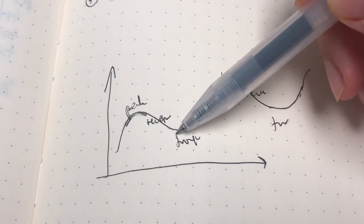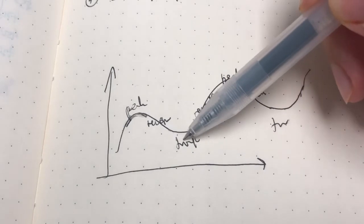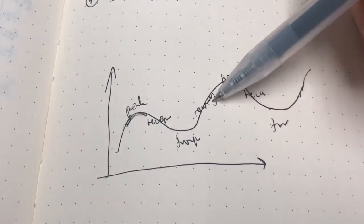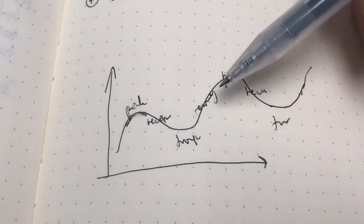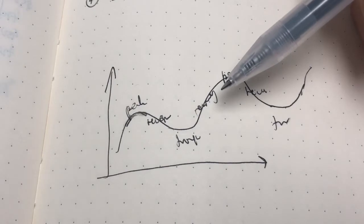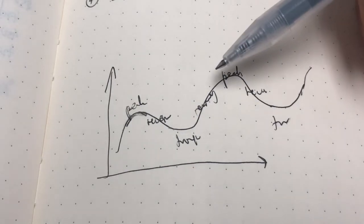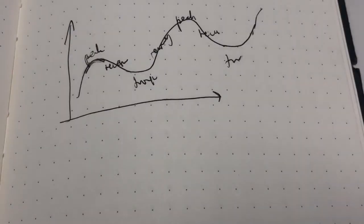However, the expansionary fiscal policy may only come into effect once the economy has already recovered and is experiencing a boom. That expansionary fiscal policy would just lead to overheating and even more inflation than necessary. What are the causes of these lags in fiscal policy? Well, there are several.